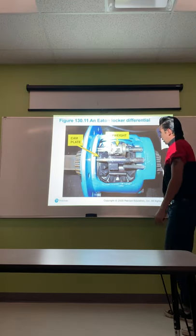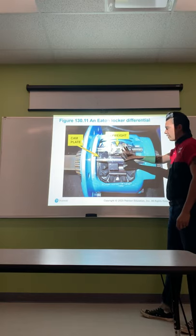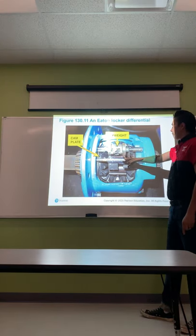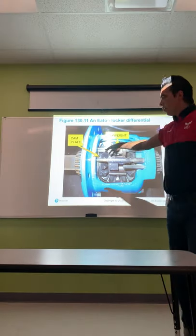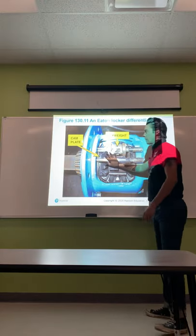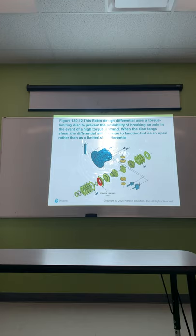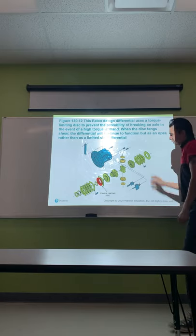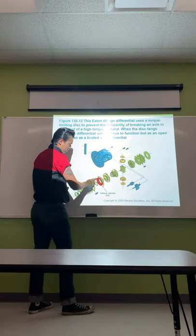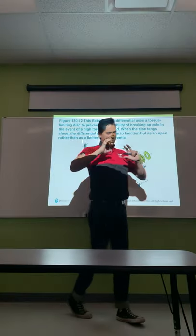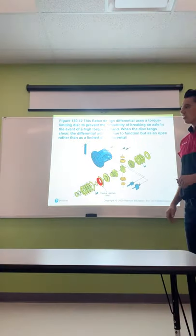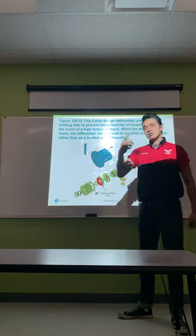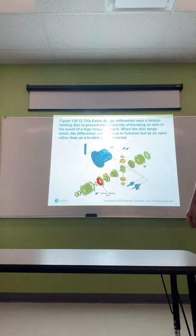The Eaton Locker differential has a lot more parts involved. The upside is obviously you get positive traction, but the downside is there are a lot more parts that can go bad or break. This Eaton design uses a torque-limiting disc to prevent breaking an axle during high torque demand. When the disc tangs shear, the differential will continue to function as an open differential rather than a limited slip — a fail-safe. These tangs are meant to break before the axle does, so if you drop the clutch hard, the tangs break and allow it to spin freely.